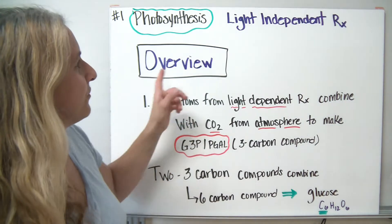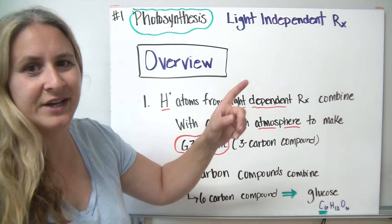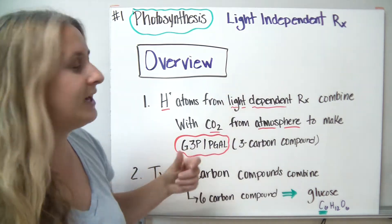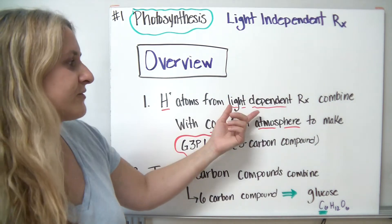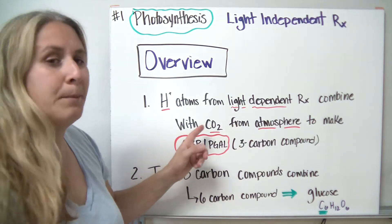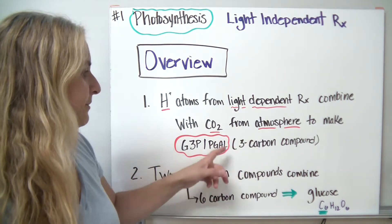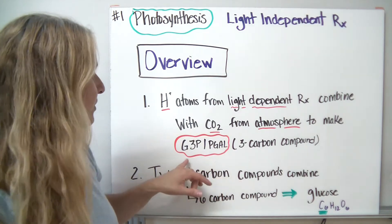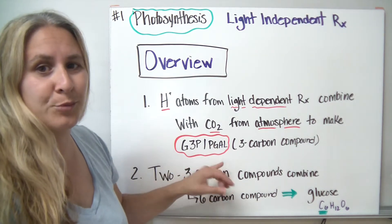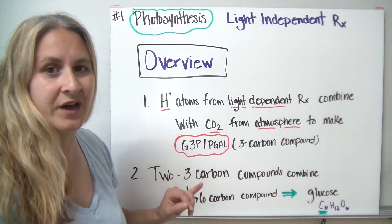An overview of the light-independent reactions, which means now we do not need light: the hydrogen atoms from the light-dependent reactions combine with carbon dioxide from the environment or atmosphere to make a three-carbon compound, which we're going to call G3P or PGAL, phosphoglyceraldehyde.